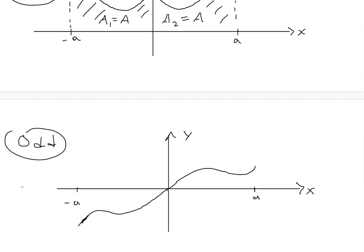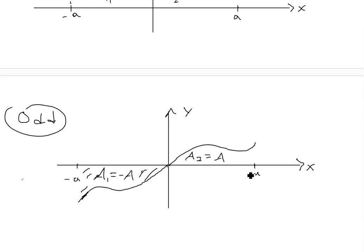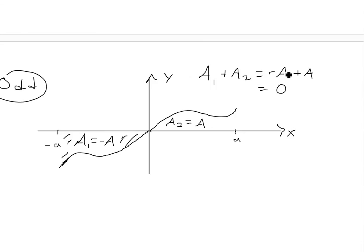For an odd function, the right side is either positive or negative, and the left side is the opposite. There's a positive area above the x-axis on one side, but on the other side of the y-axis the same shape goes below — it's symmetric but in a negative form. Calling the left area A1 equals negative A and the right area A2 equals positive A, we get A1 plus A2 equals negative A plus A, which equals zero. So the net area is zero.